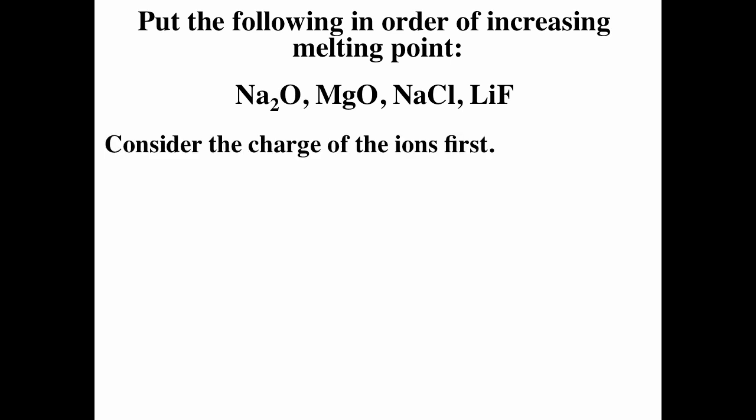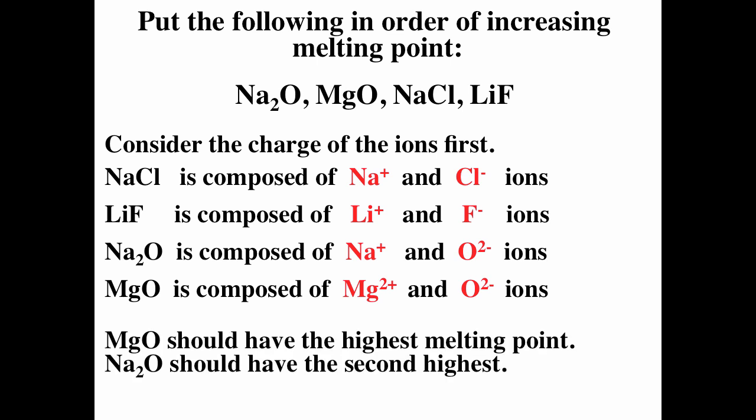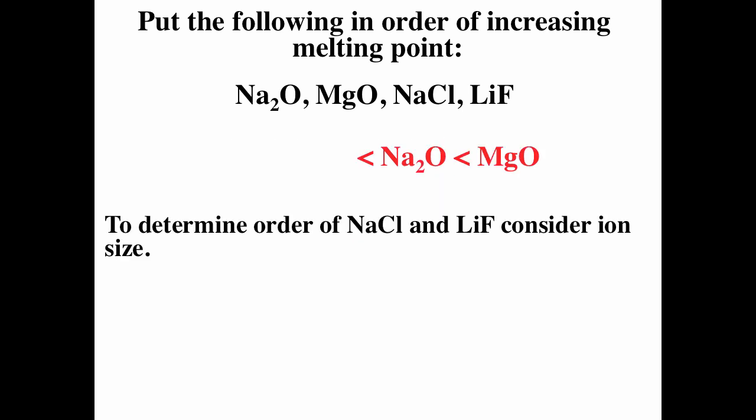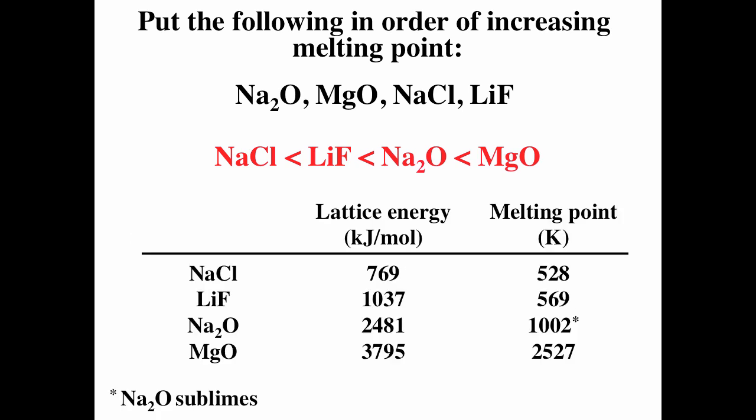To put ionic compounds in order of increasing melting point, first rank by charges. Magnesium oxide is +2/−2, sodium oxide is +1/−2, lithium fluoride is +1/−1, and sodium chloride is +1/−1. Magnesium oxide should have the highest melting point due to its largest charges, followed by sodium oxide. For lithium fluoride and sodium chloride, both +1/−1, we look at ion size: lithium is above sodium on the periodic table so it's smaller, and fluorine is above chlorine so it's smaller — so lithium fluoride has a higher melting point than sodium chloride. The actual numbers confirm this prediction.